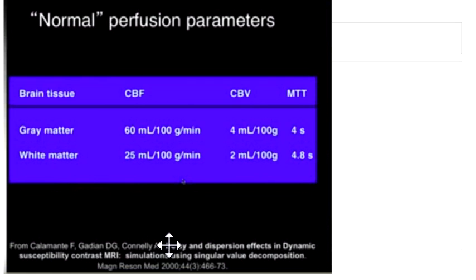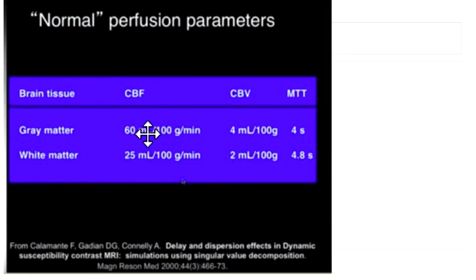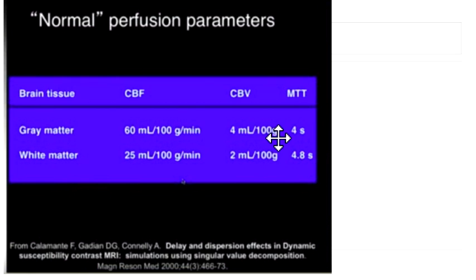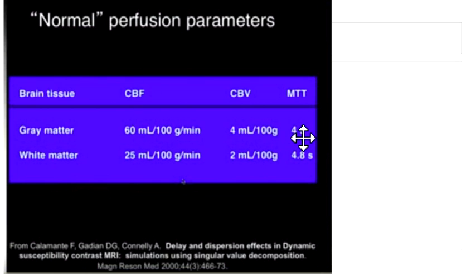Let's talk about what normal perfusion parameters look like. Cerebral blood flow to the gray matter is a little higher than white matter, so we usually look at the gray matter. Normal CBF is 60 mLs per 100 grams of tissue per minute. Normal cerebral blood volume is 4 mLs of blood within a 100-gram unit of brain parenchyma. Mean transit time is about 4 seconds to get in and get out. So: CBF normal is 60, CBV is 4, and MTT is 4 seconds.